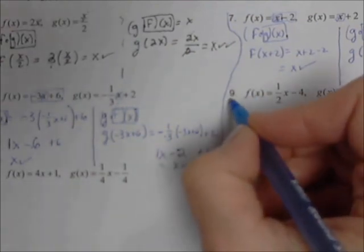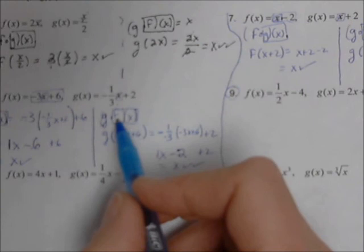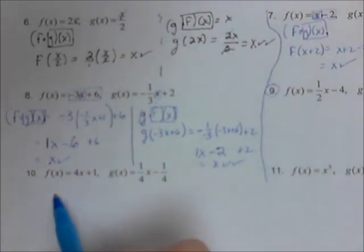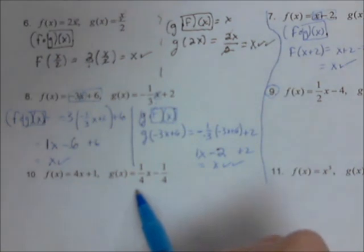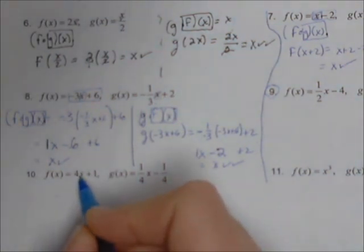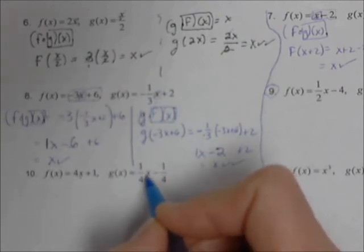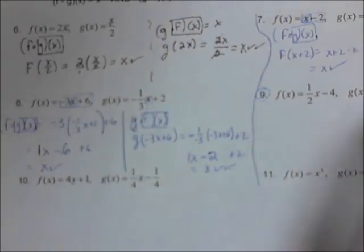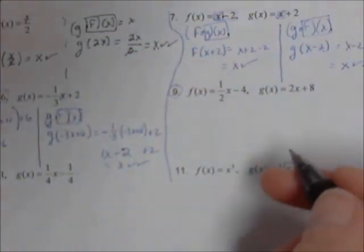I'm going to have you try number 9 on your own, which is very similar to number 8 with the fractions. I'm also going to ask you to try number 10 on your own, again similar to number 8. You're going to replace this x with the whole g of x, and then replace this x with the whole f of x, and hopefully it'll simplify down to x.